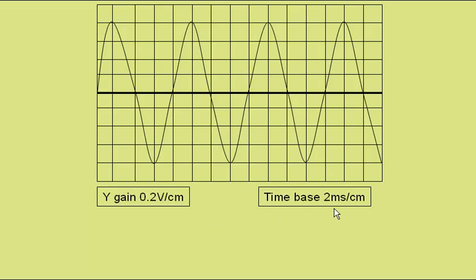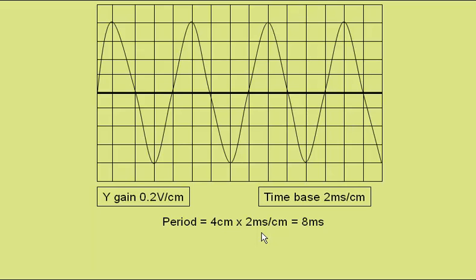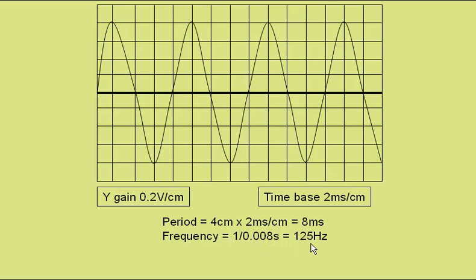Here, the time base is 2 milliseconds per centimetre, and the trace covers 4 centimetres time period. So the time period is 4 times 2 milliseconds per centimetre, or 8 milliseconds, giving a frequency of 1 over 0.008 — 125 hertz.